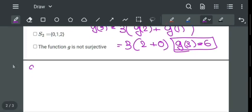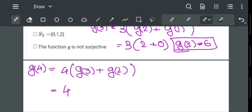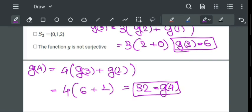g of 4 equal to 4 times g of 4 minus 1 is g of 3, plus g of 4 minus 2 is g of 2, which is equal to 4 times 6 plus 2. So, 4 multiplied by 8 is 32. g of 4 has value 32.